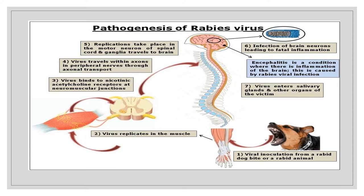Certain contacts are not reported to transmit rabies. Human-to-human transmission through bites or saliva, though theoretically possible, has never been documented. Consuming raw milk or raw meat of infected animals poses no risk of transmission. Rodent bites do not require ARV. Petting a rabid animal or contact with blood, urine, or feces carries no risk because there is no viremia — contact with blood carries no transmission risk.